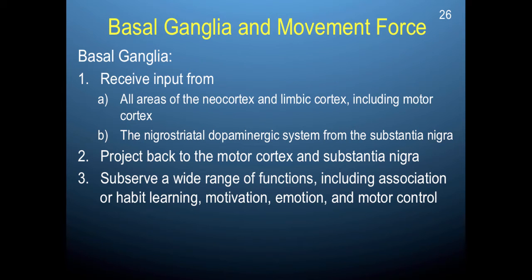The basal ganglia receives input from all areas of the neocortex and the limbic cortex, including the motor cortex. It's also part of the nigrostriatal dopaminergic system from the substantia nigra. The basal ganglia projects back to the motor cortex and the substantia nigra, and it subserves a wide range of functions, including association or habit learning, motivation, emotion, and motor control.